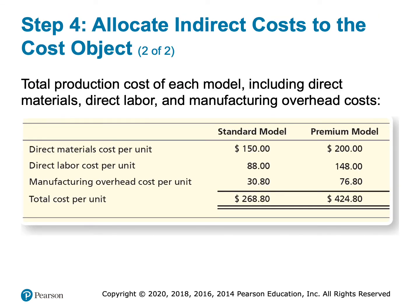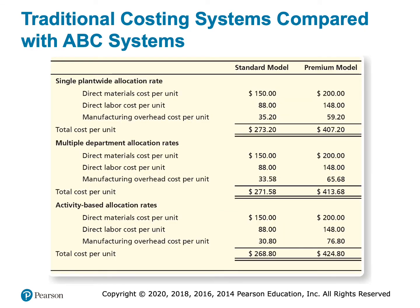Now I can add direct materials and direct labor to come up with my new cost per model. The standard model is going to cost approximately $268.80 — still an approximation, but a better one than before — and for the premium model, $424.80. Now we can compare the total cost using the single traditional plant-wide rate versus the multiple department rates from video one versus the activity-based costing we've done here.